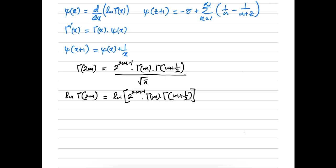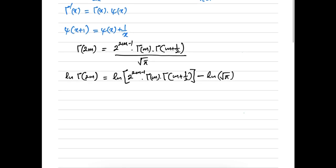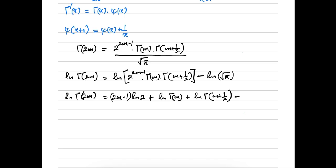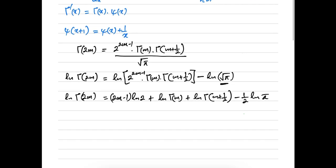Then there is a division, so if we take the natural log we have minus ln(√π). We can simplify: ln γ(2m) = (2m-1)·ln 2 + ln γ(m) + ln γ(m + 1/2) - (1/2)·ln π. Then I am going to differentiate with respect to m. We know the derivative of ln γ is defined as the digamma function, and here we have 2m, so we multiply by the coefficient of the variable.